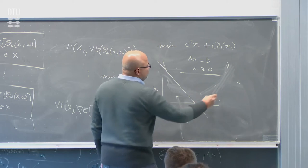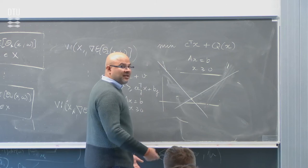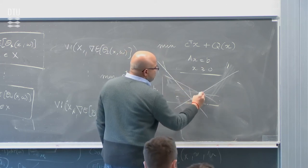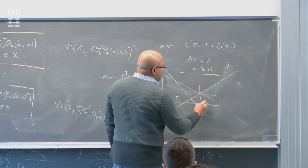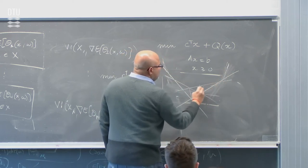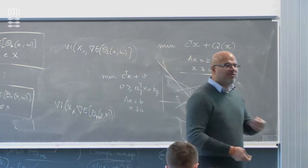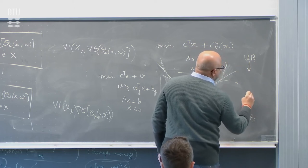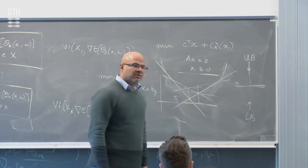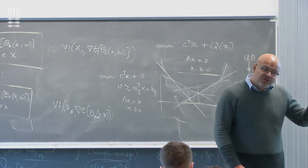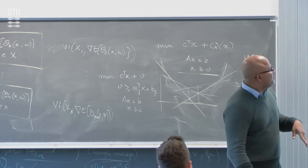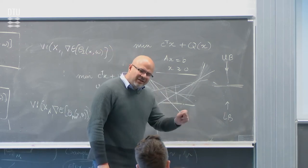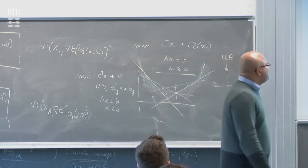Cutting plane methods solve a sequence of problems of this form. Graphically: you solve a problem, you come to a point; in the next step, you use this to generate another cut; you keep generating cuts. Within the algorithm, you have something that generates upper and lower bounds — the upper bound and lower bound keep coming closer. At some point they're within a threshold, and you terminate. That's a standard approach for solving two-stage stochastic linear and convex optimization problems.